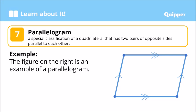Parallelogram. A parallelogram is a special classification of quadrilateral. It has two pairs of opposite sides that are parallel to each other. Isang pair — silang dalawa — are parallel. Another pair of parallel lines — silang dalawa — are parallel din. So we call this a parallelogram.